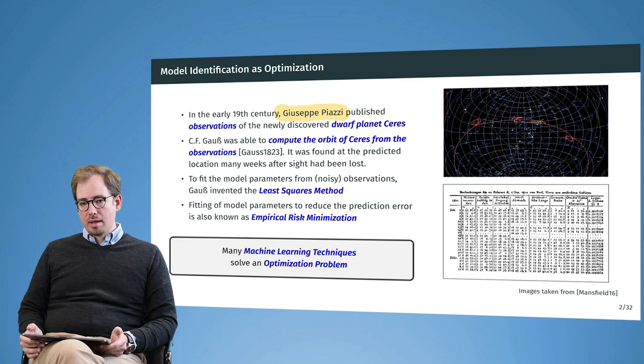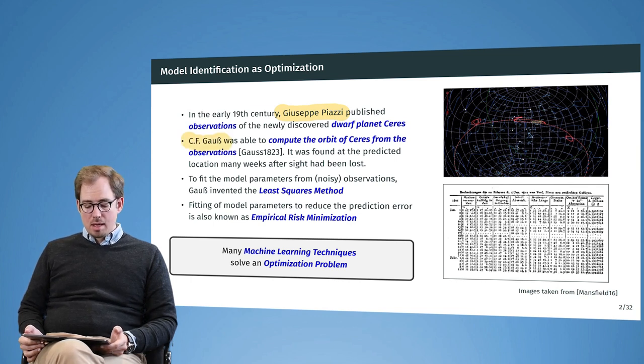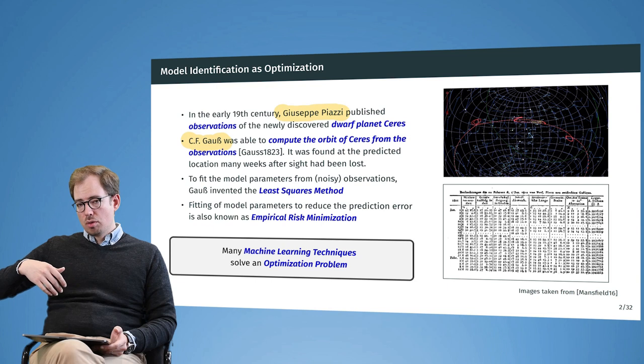He had several observations on different days where he found the planet in the sky, and then Ceres was lost. The big question was whether astronomers were able to predict the orbit so they could re-find Ceres when it came back into view from Earth. Carl Friedrich Gauss, a famous mathematician, was able to compute the orbit of Ceres.